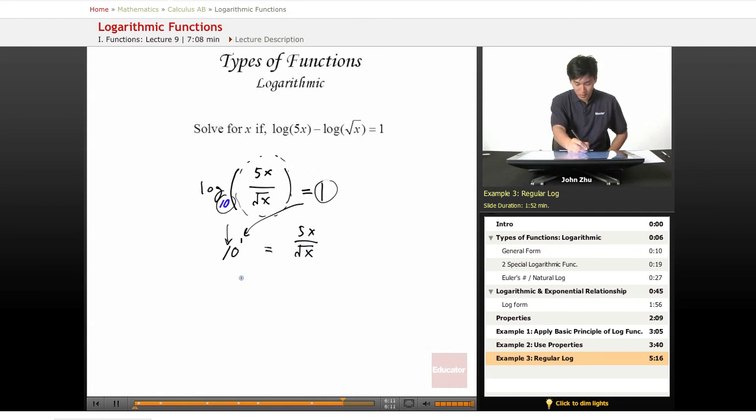In other words, 10 times square root of x equals 5x. And all we have to do is square both sides to get rid of the square root term. So let's square both sides.